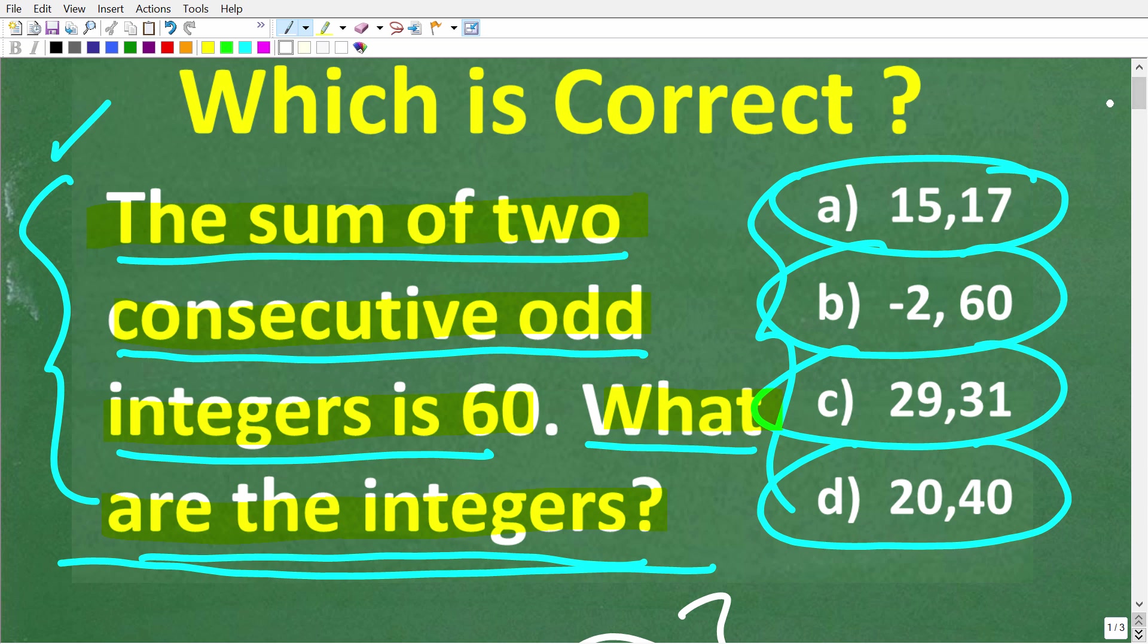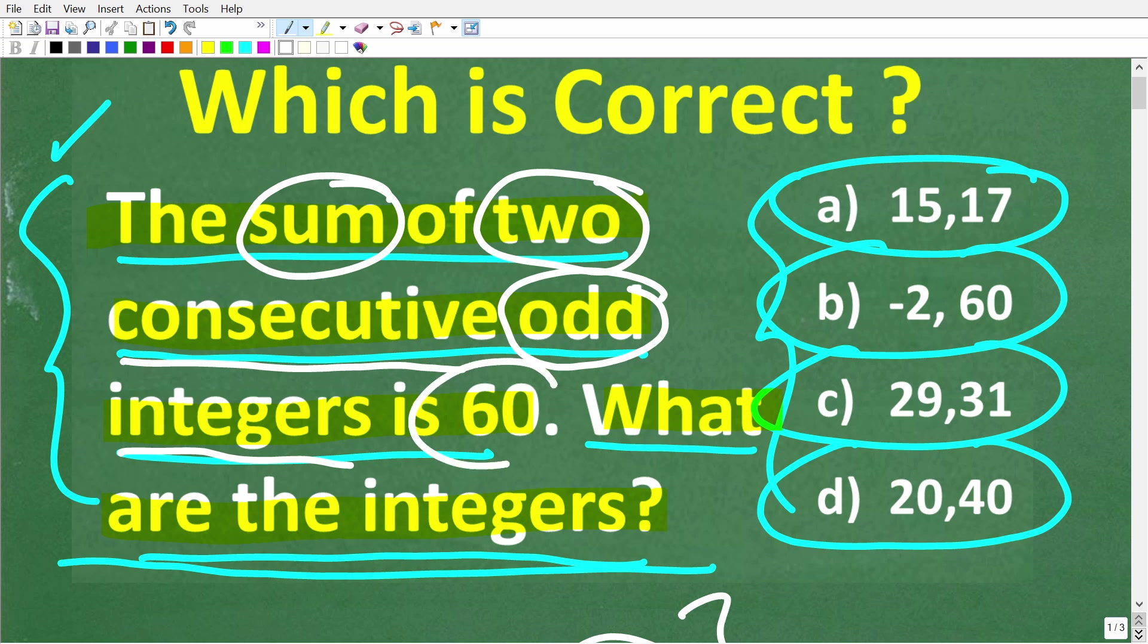Let's just pick out the words that you hopefully understand. So hopefully all of you out there know what the sum is. The sum is the result of adding up numbers. How many numbers are we talking about? We're talking about two numbers that happen to be odd.